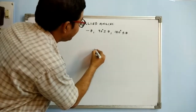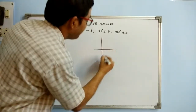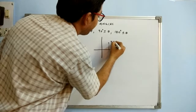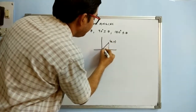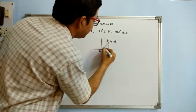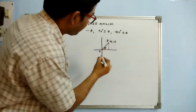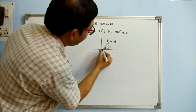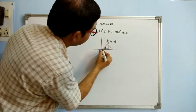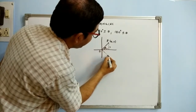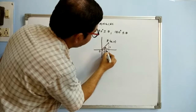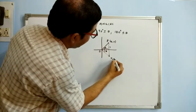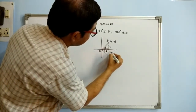Firstly, we are dealing with minus theta. If we take a point P whose coordinates are (x, y) and OP makes an angle theta with the positive direction of the x-axis, then when we revolve OP in the clockwise direction to make angle minus theta, the point moves to coordinates (x, minus y).